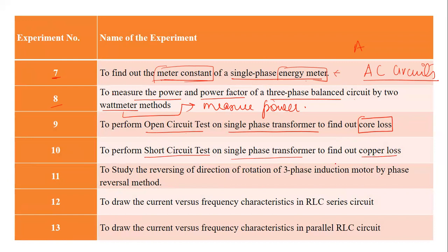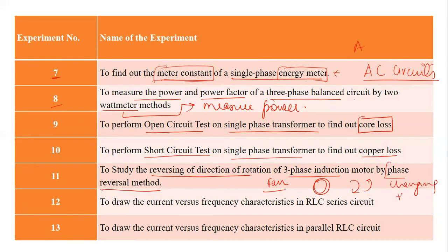After that, we will see how to reverse the direction of rotation of a three-phase induction motor by a method known as the phase reversal method. Generally, AC motors like a fan rotate in the same direction. But using the phase reversal method, we can reverse the direction. As far as a DC motor is concerned, reversing polarity reverses the direction, but for an AC motor, we need the phase reversal technique.